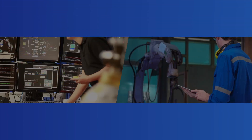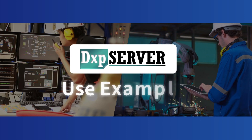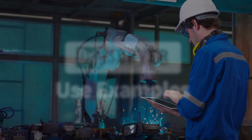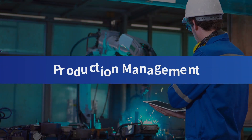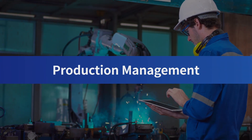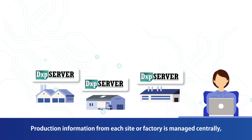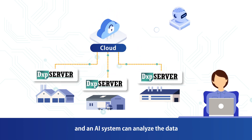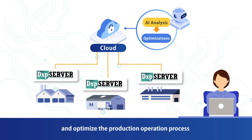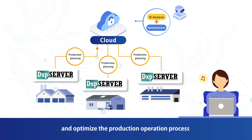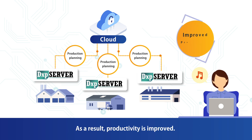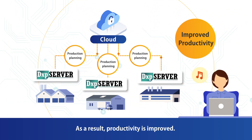Device Explorer OPC Server is an ideal communication platform for various solutions. In Production Management, production information from each site or factory is managed centrally, and an AI system can analyze the data and optimize the production operation process in line with daily changes to production planning. As a result, productivity is improved.